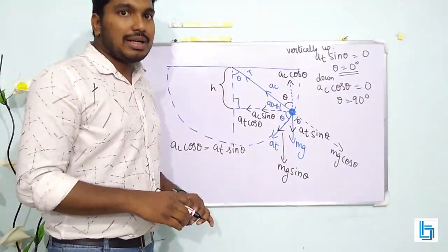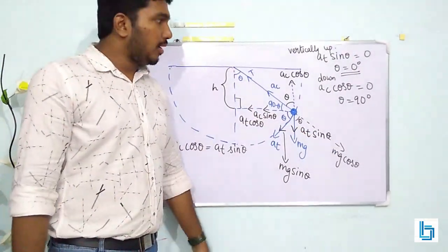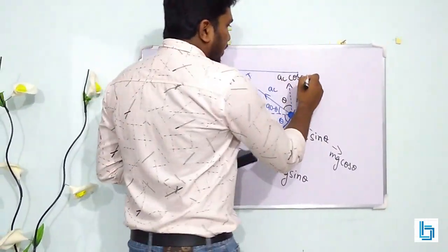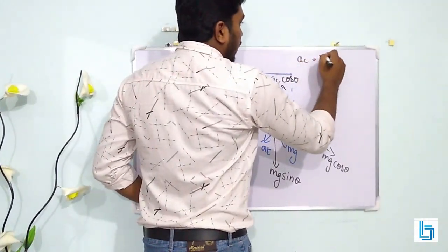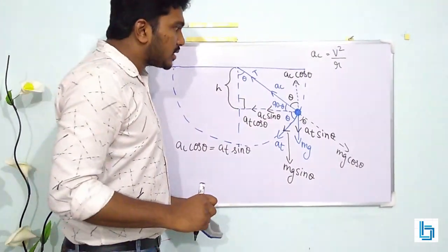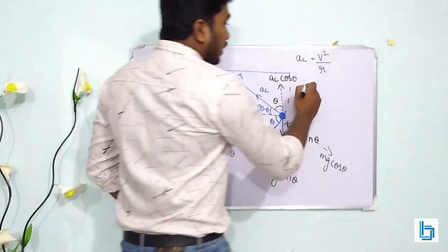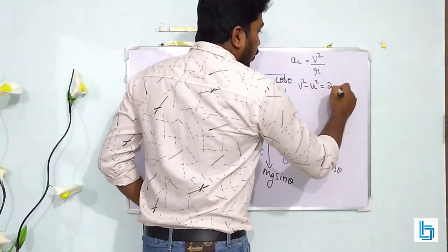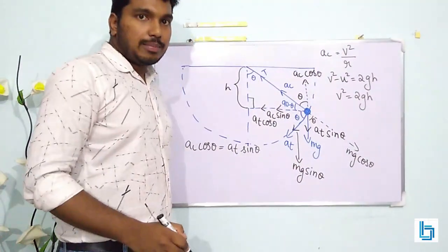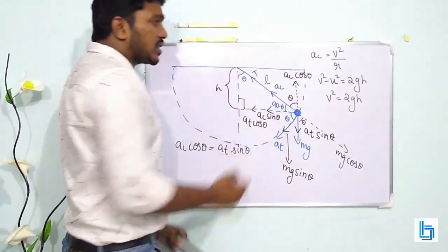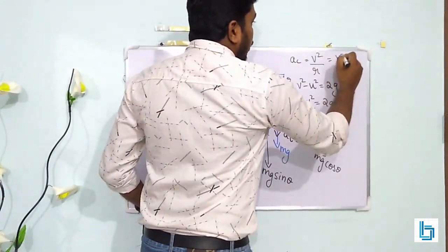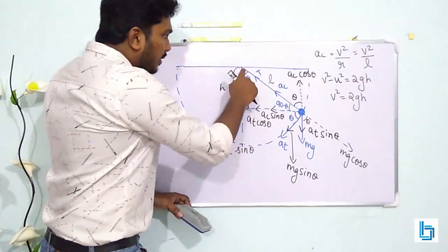To find AC, it equals V squared by R, which is V squared by L where L is the length of the string. From the triangle, cos theta equals H by L, so H equals L cos theta. Using energy conservation, V squared equals 2gL cos theta. Therefore, AC equals 2gL cos theta divided by L, which gives AC equal to 2g cos theta.